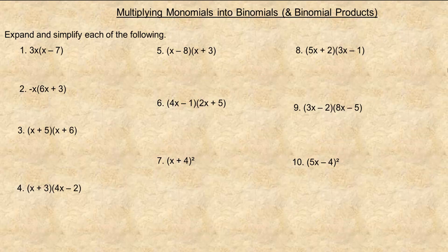Let's start with number one. We're going to distribute the 3x into the (x minus 7). Using arrows: 3x times x is 3x squared, and 3x times negative seven is minus 21x. Those are not like terms, just like x and negative seven are not like terms, so you cannot combine or simplify that further.